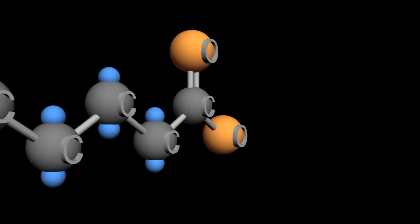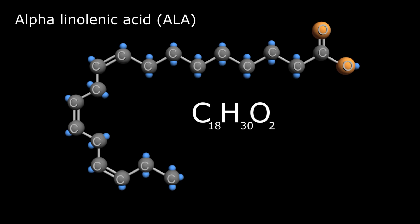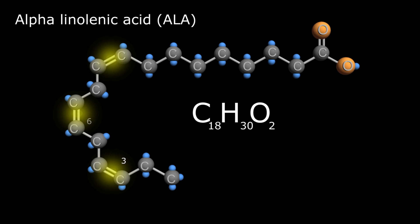Now let's get into the specifics of omega-3 fatty acids. There are three: ALA, EPA, and DHA. We'll start with the smallest and go to the biggest. The smallest is ALA, or alpha-linolenic acid, with the chemical formula C18H30O2. This is the plant-based form of omega-3 fatty acids, and we get it from flaxseed, chia, soybean, walnuts, and so on. As you can see, there are 18 carbons in this molecule, and it has three double bonds at the omega-3, omega-6, and omega-9 carbons, giving it this characteristic hook shape.